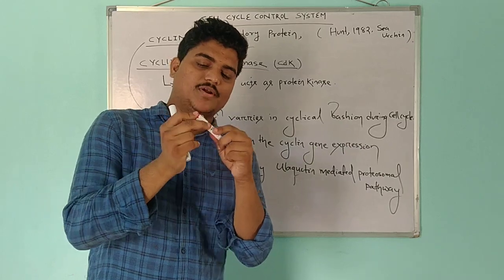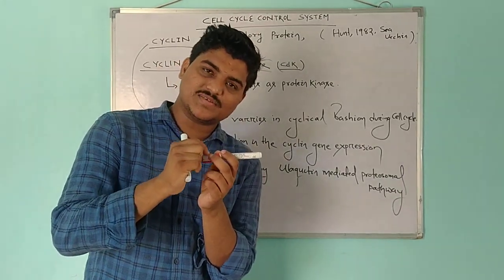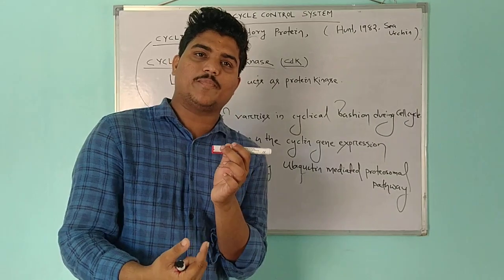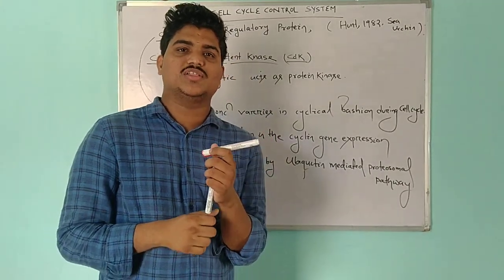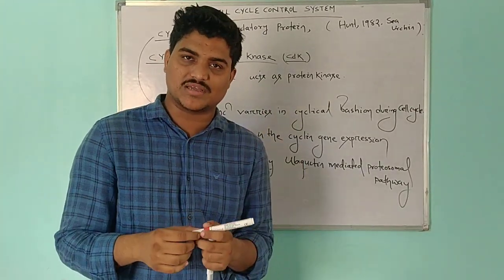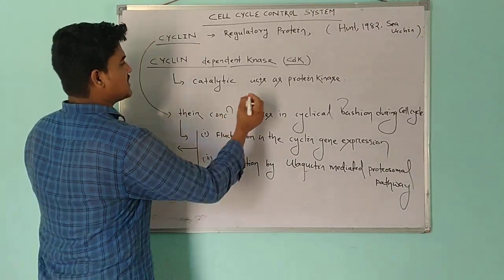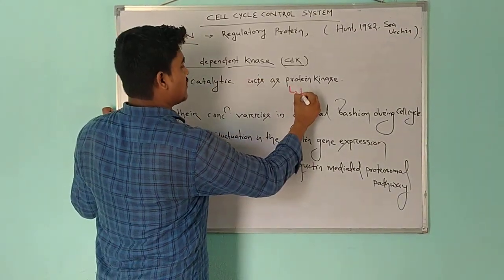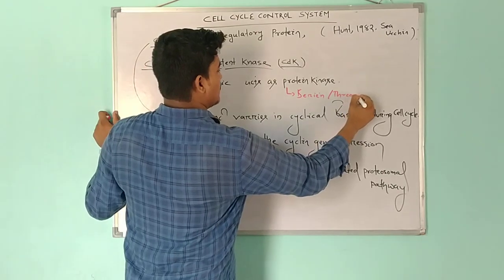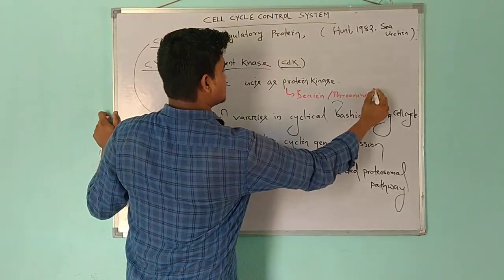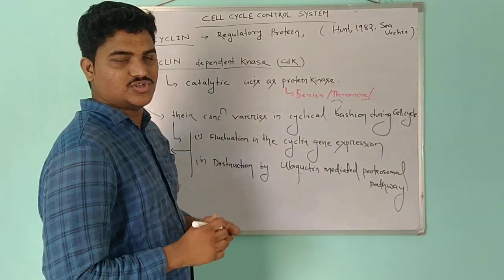After the formation of the cyclin-CDK complex, CDK will activate, and that respective CDK will cause the phosphorylation of target proteins. The phosphorylated target protein will carry out functions in the cell or drive progression in the cell cycle. CDK falls under the category of serine-threonine protein kinase — cyclin-dependent kinase targets proteins and phosphorylates them at serine and threonine amino acid residues.